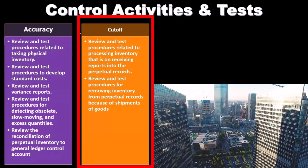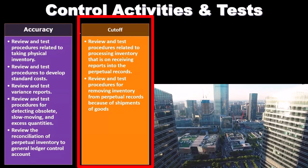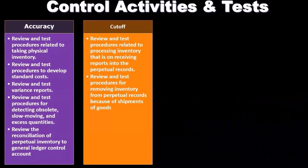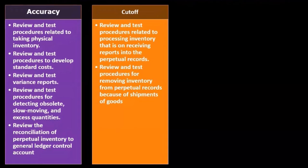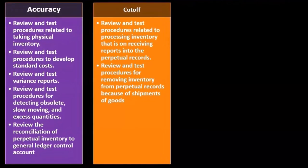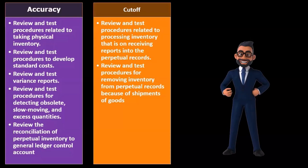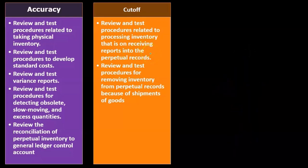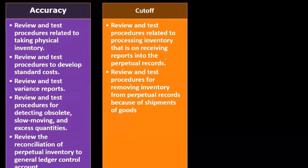Then we have the assertion of cutoff — end-of-year information. What are the controls to make sure things are recorded in the proper time period? Review and test procedures related to processing inventory on receiving reports into the perpetual record. We're tracking inventory on a perpetual basis, so we consider the receiving reports and how they relate to the perpetual records — because we should record inventory into the system at the point in time we have received it, with receiving reports being the triggering point.